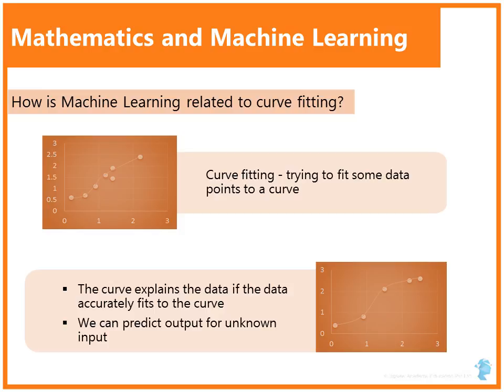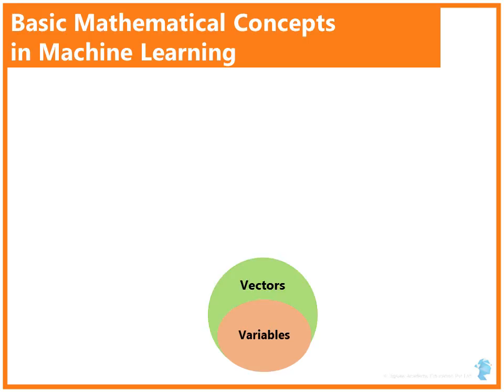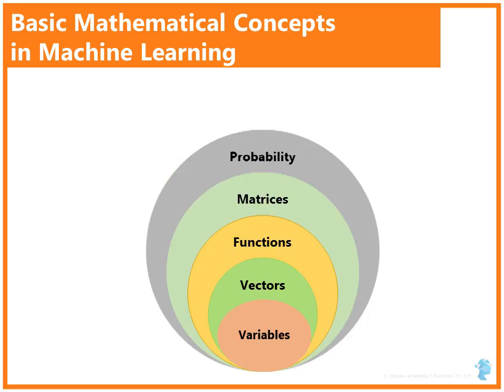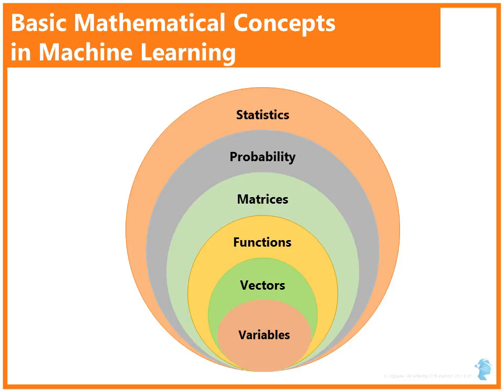Basic mathematical concepts used in machine learning are variables, vectors, functions, matrices, probability and statistics. Again, as we are just learning machine learning at the application level, we don't have to go much deeper mathematically. Let's just try to spend few minutes with each of these concepts.